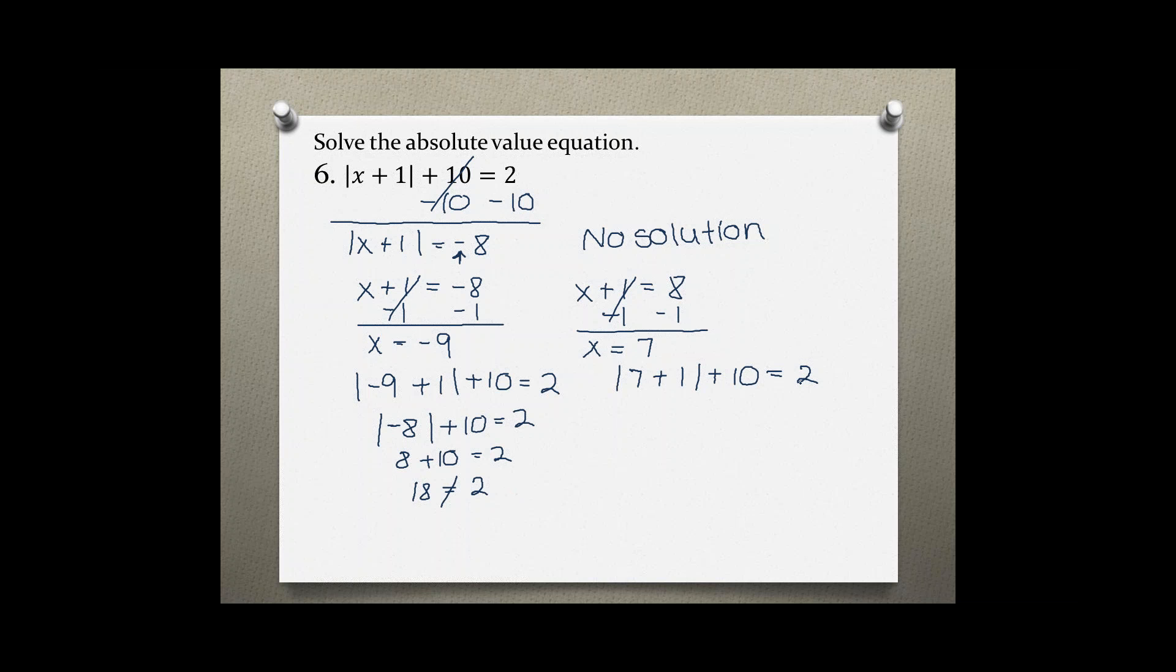have a similar discovery. So 7 plus 1 is the absolute value of 8 plus 10 equals 2. The absolute value of 8 is 8 plus 10 equals 2, and again 18 is not equal to 2.